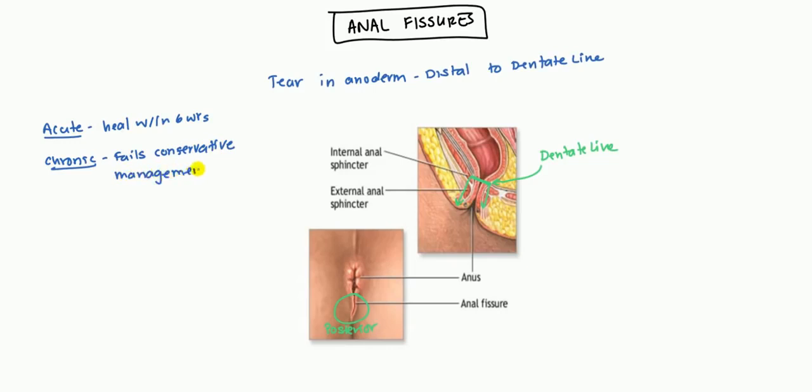And since it fails conservative management, the only other management option left for these patients is surgery. So this is going to be the chronic case. And this is usually some type of underlying pathology which is causing these recurrent strictures and the recurrent damage. And we'll get into some of those conditions in a little bit.